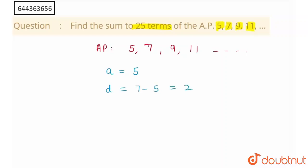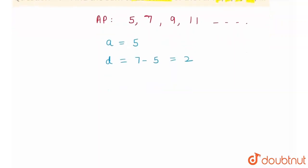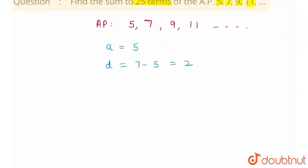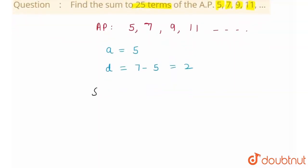And here I need to find the sum of 25 terms. And I know that the sum of n terms is equal to n upon 2, times 2a plus n minus 1 into d.